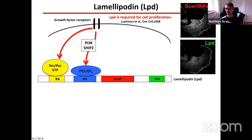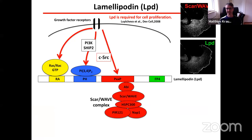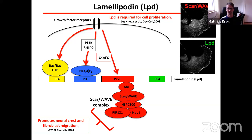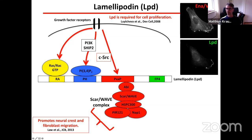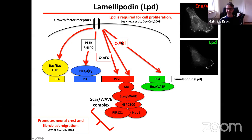In recent years we have characterized the protein lamellipodin, so named because it localizes to the very edge of lamellipodia and co-localizes with the SCAR/WAVE complex. We have found that lamellipodin functions downstream of growth factor receptors, Ras, and Rac, and also functions downstream of PI3K signaling — those two signals are required for its leading-edge recruitment. The C-terminus of lamellipodin is the business end: it contains binding sites for direct interaction with the SCAR/WAVE complex, and this interaction is promoted by active Rac and c-Src phosphorylation of lamellipodin. The interaction of lamellipodin with the SCAR/WAVE complex is required for lamellipodin's function to promote neural crest and fibroblast migration.